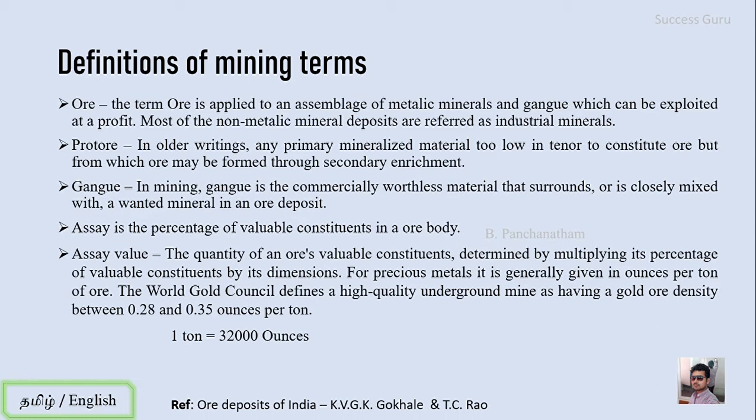So volume multiplied by the assay gives us the assay value. For precious metals it is generally given in ounce per ton of ore. For gold, the World Gold Council defines a high-quality underground mine as having a gold ore deposit of between 0.28 to 0.35 ounce per ton. So if one ton of ore contains in the range of 0.28 to 0.35 ounce of gold, it is considered a high-quality deposit. One ton equals 32,000 ounces, so 0.28 ounce per 32,000 ounces is considered a high-quality mineral deposit, especially for gold.